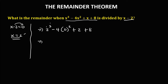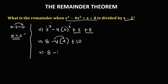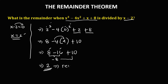Then simplify. 2 to the power 3 is 8. Minus 4 times 2 to the power 2 — that's 4 — so minus 4 times 4 is negative 16. Then positive 2 plus 8 is positive 10. So we have 8 minus 16, which is negative 8, then negative 8 plus 10. Therefore the remainder is positive 2.